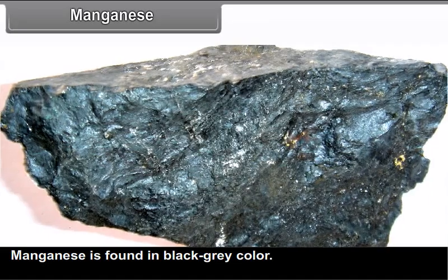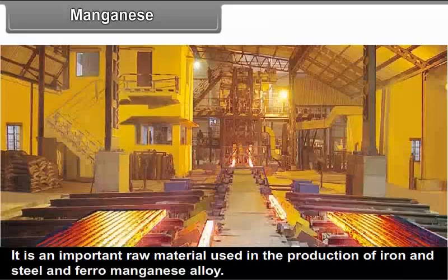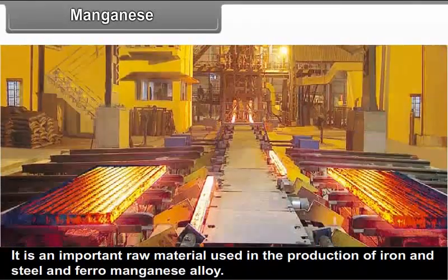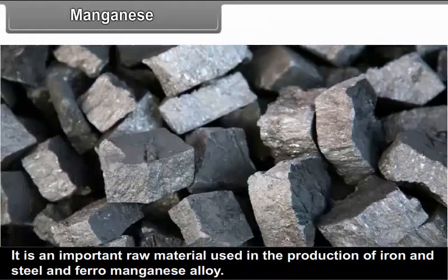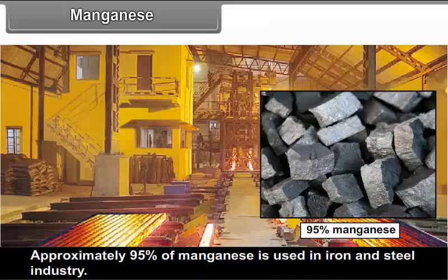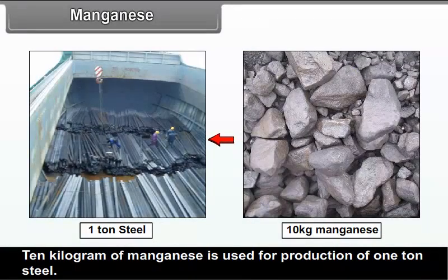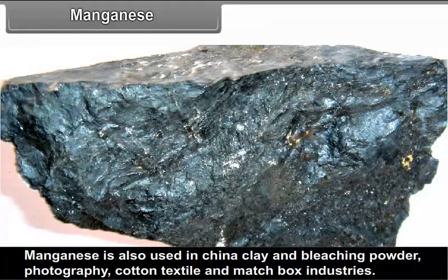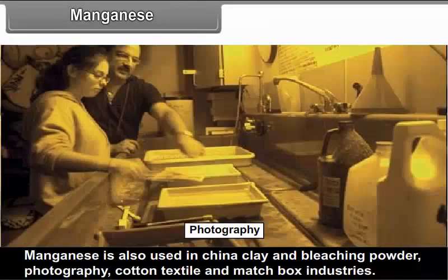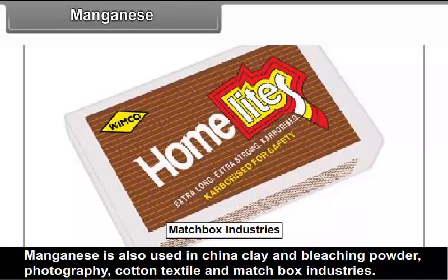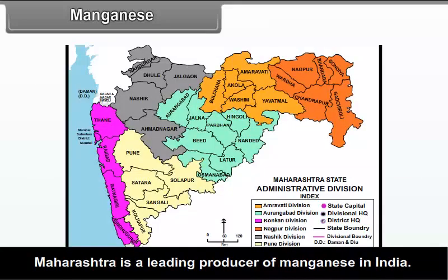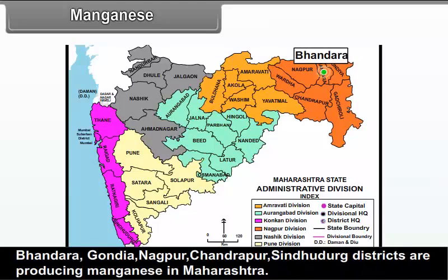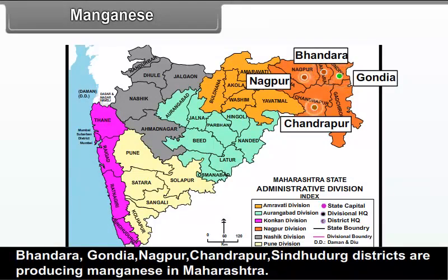Manganese: Manganese is found in black-grey color. It is an important raw material used in the production of iron and steel and ferro-manganese alloy. Approximately 95% of manganese is used in the iron and steel industry. 10 kg of manganese is used for the production of 1 ton of steel. Manganese is also used in china clay and bleaching powder, photography, cotton textile and matchbox industries. Maharashtra is a leading producer of manganese in India. Bhandara, Gondiya, Nagpur, Chandrapur and Sindhudurg districts are producing manganese in Maharashtra.